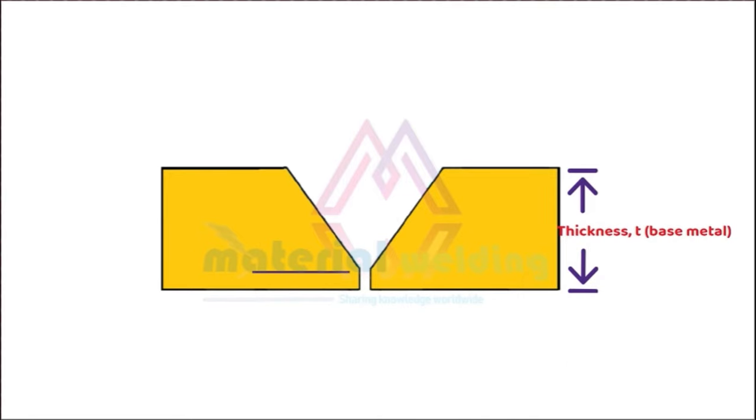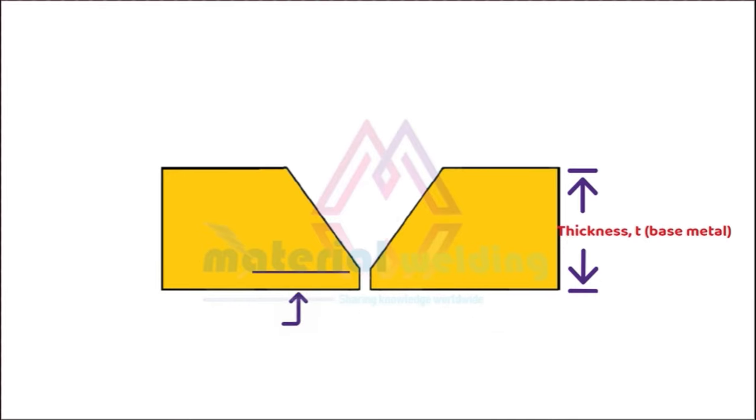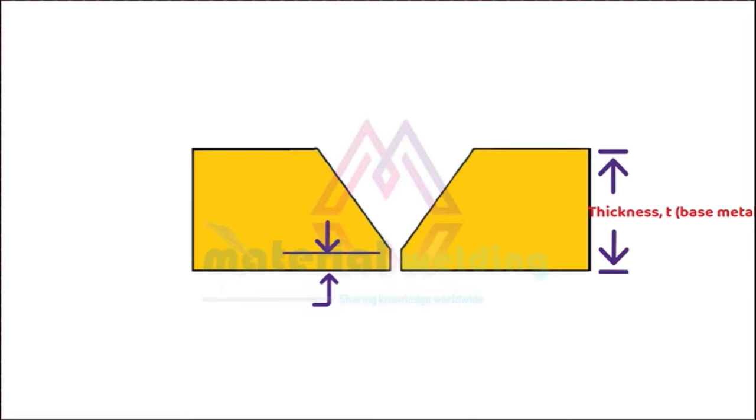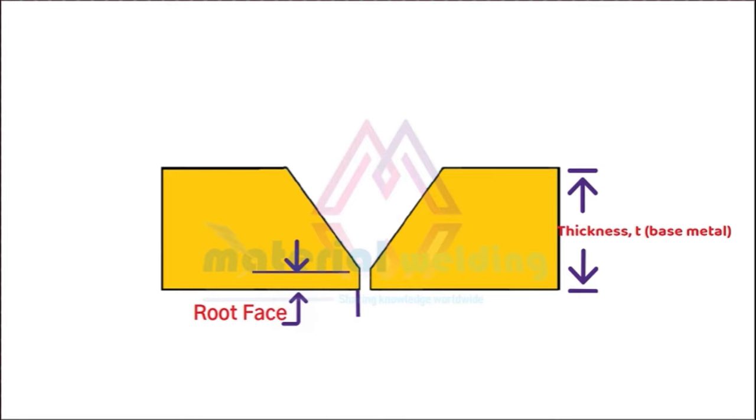The broad area under the weld bevel is called the root face. The gap between two plates before welding is called the root gap or root opening.